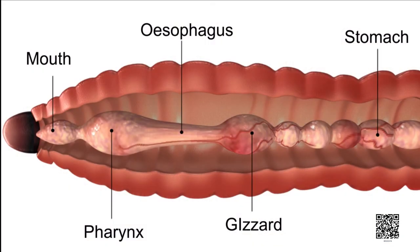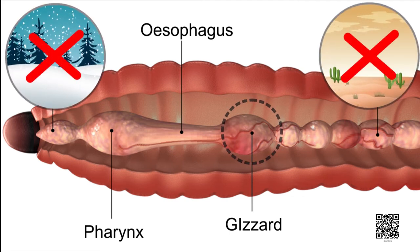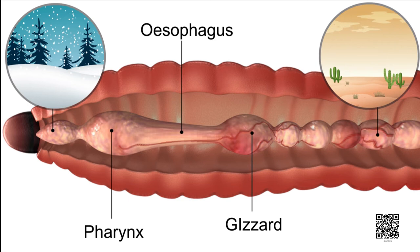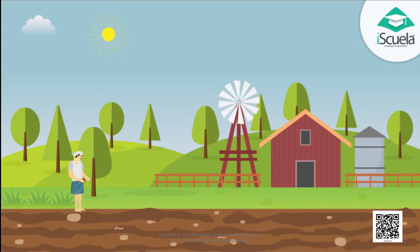Redworms do not have teeth. They have a structure called gizzard which helps them in grinding their food. Redworms do not survive in very hot or very cold surroundings. They need moisture all around them. Let us now understand the process of vermicomposting.